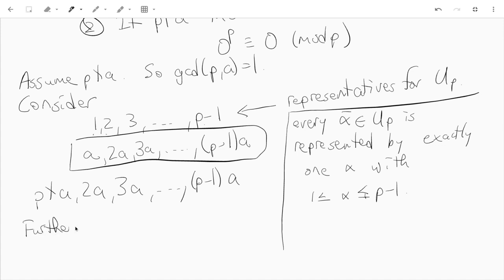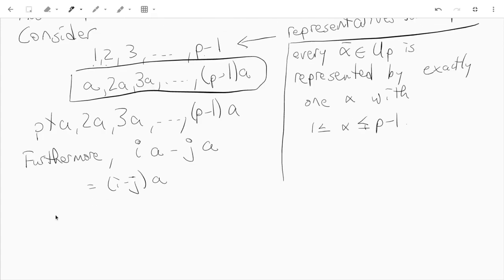Furthermore, not only that, but if I look at the difference of any two distinct elements, the difference will not be divisible by p. If I look at ia - ja, well that's just (i-j)a. This is not divisible by p, if we take i and j to be in this range, and let's say j is less than i. Because the difference i-j will also be in this range, and it'll be bigger than or equal to 1, and at most p-2.